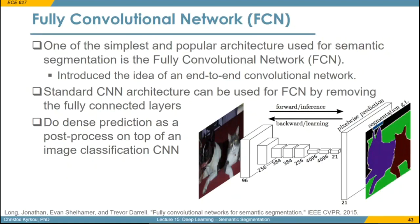The main components we saw, like the up-sampling and the convolutional layers, came out of different architectures developed for semantic segmentation. One of the first that started the whole trend of using fully convolutional networks for segmentation is the fully convolutional network by Long, published in CVPR. It was one of the first to propose removing fully connected layers and having a fully convolutional architecture to predict the semantic segmentation map.